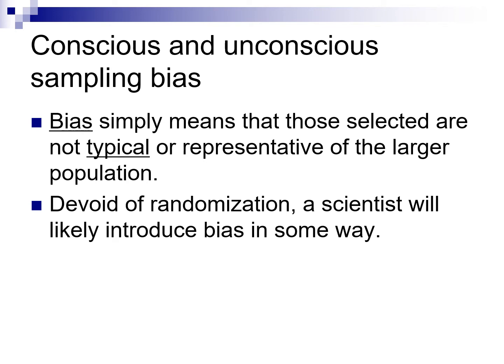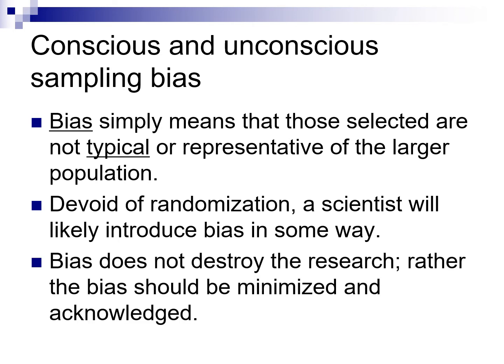Some bias the person may be aware of — for instance, not wanting to be at the courthouse in the evening, so going only in the morning. That's still a bias. It can also be unconscious — the person may not even be aware they have it. Bias is a part of research; unless you're collecting an entire population, it will exist. We should take efforts with our sampling design to minimize bias, and when we cannot avoid it, we must acknowledge it in our publications.